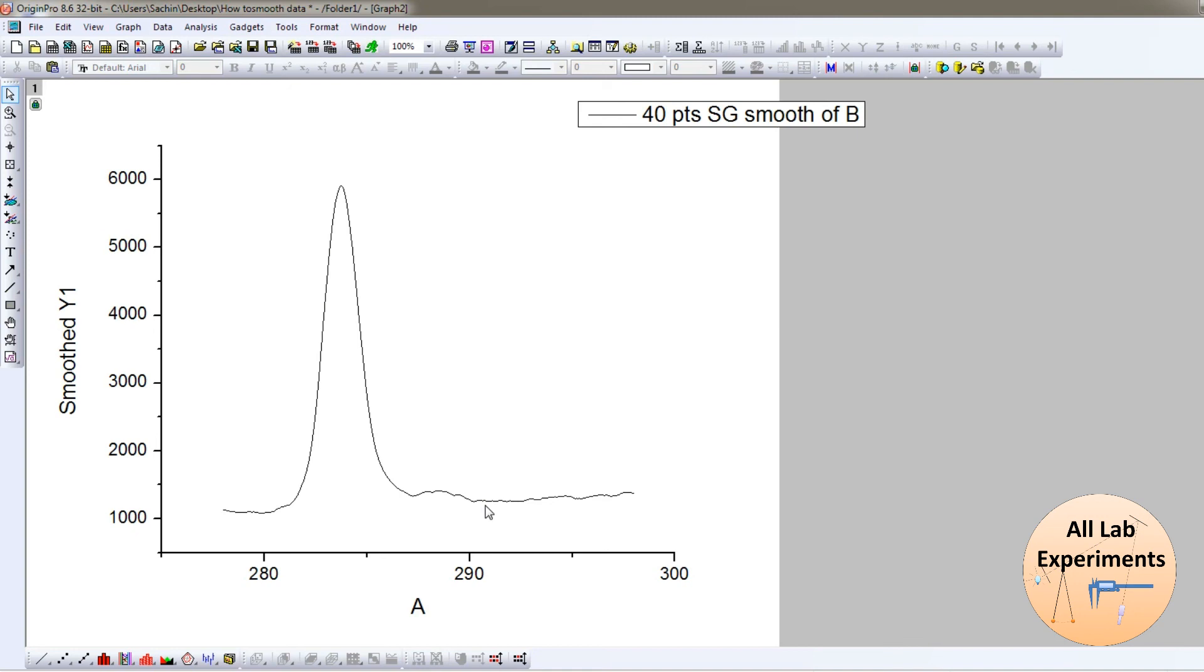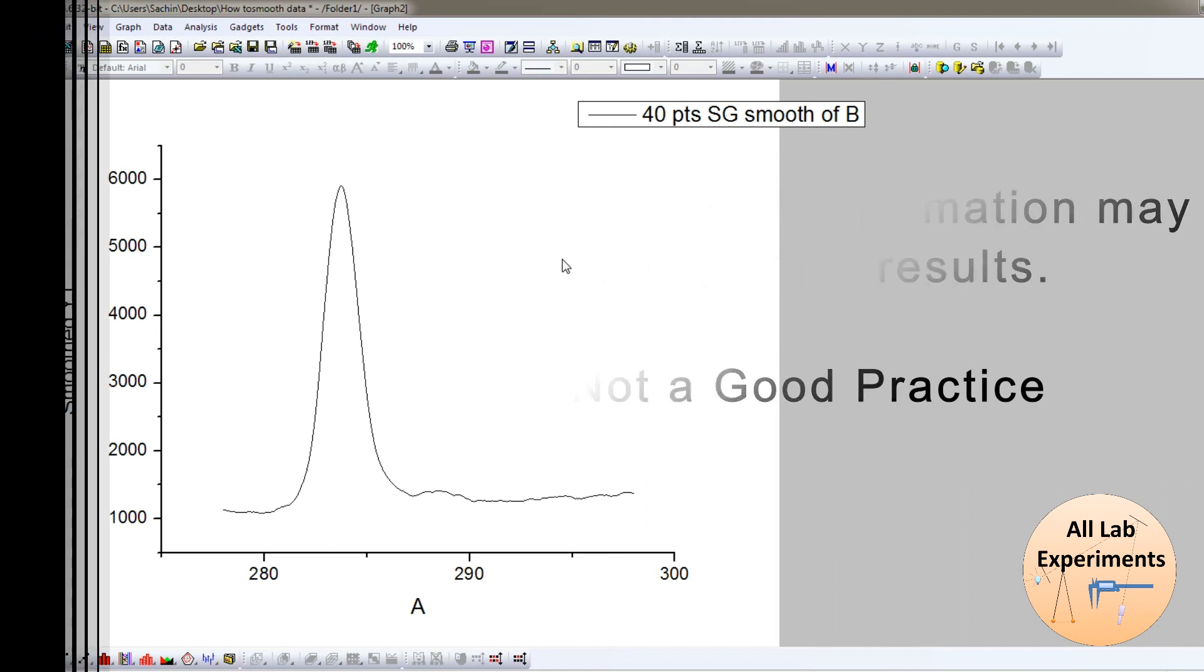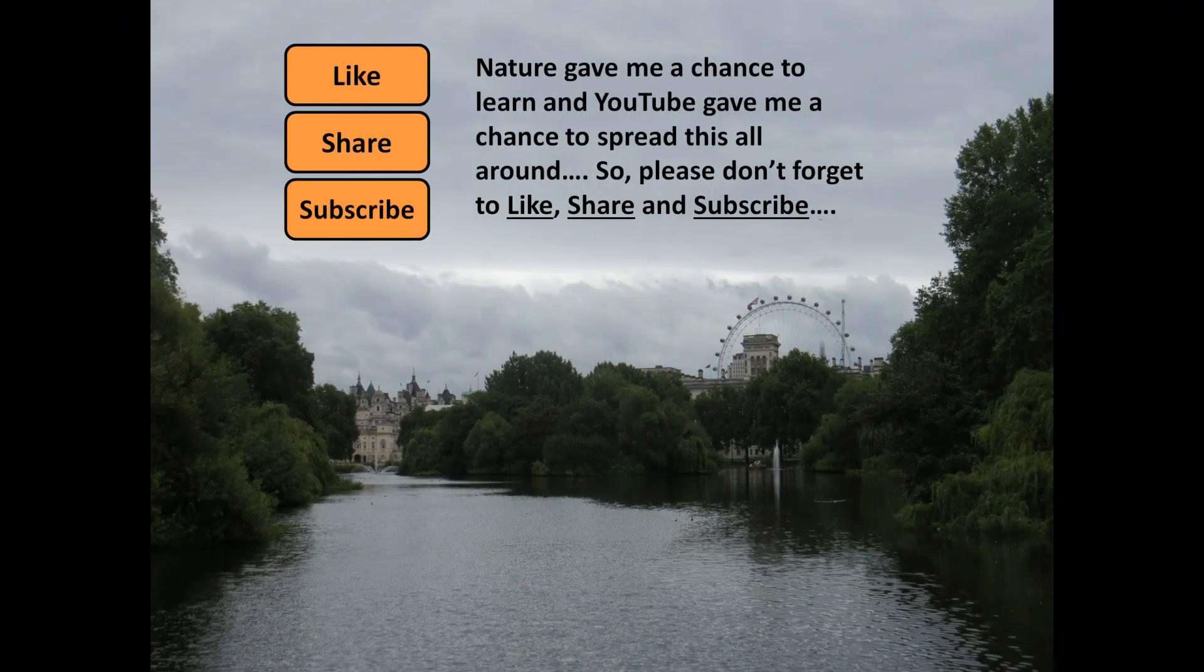You can pick any option for smoothing, but the most necessary thing is that your data must not lose information. The parameters coming out of your data should not change. If you want to do any fitting or refinement on your data, a change in peak information can totally change your results. That is not a good practice. Thanks for watching. If you like this video, please share it with your friends and don't forget to subscribe to my channel. Have a good day.